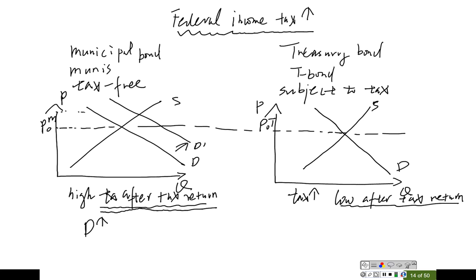So you can find out a higher level of price for the municipal bond. But on the other hand, because subject to the higher tax rate, treasury bond demand will reduce, which means the demand curve for this market will shift to the left. It will lead to a lower price level.